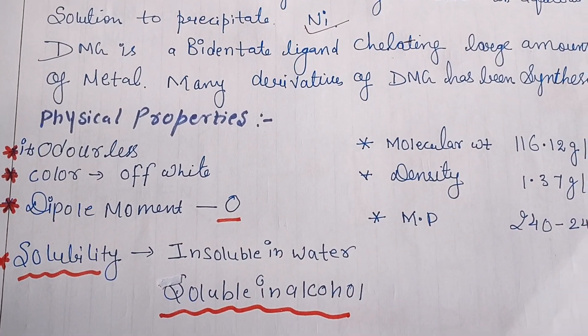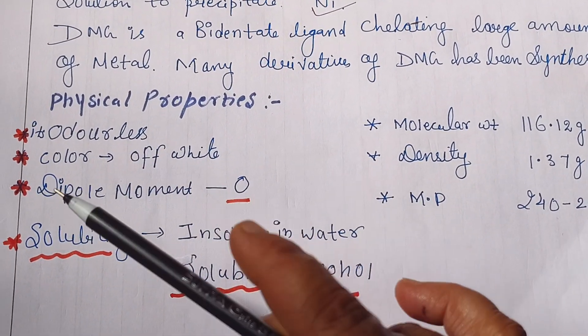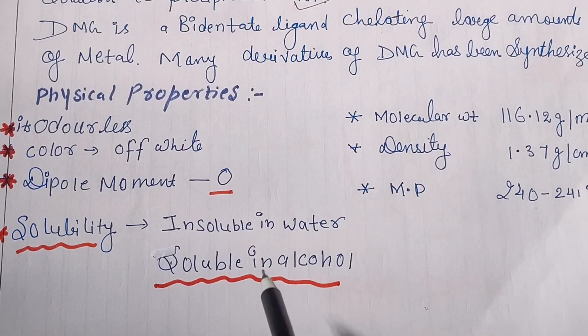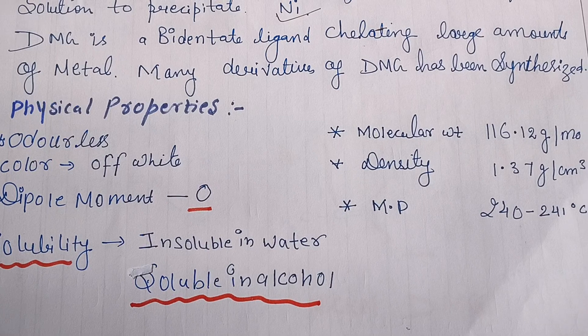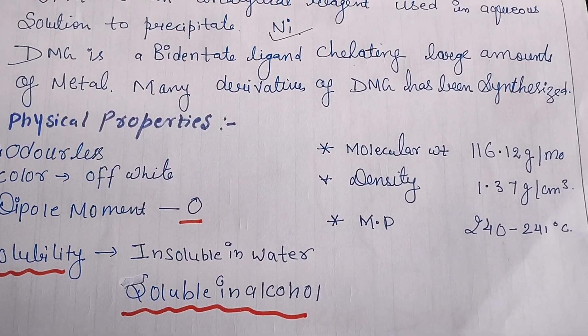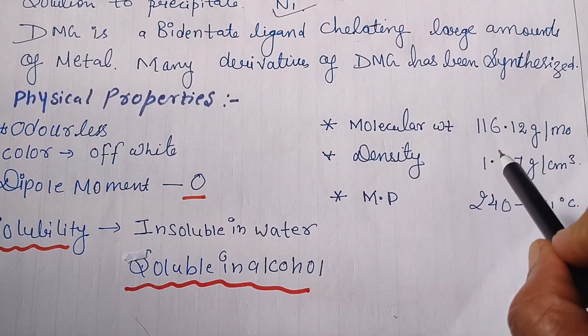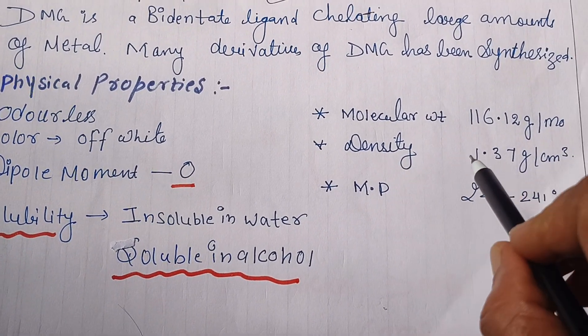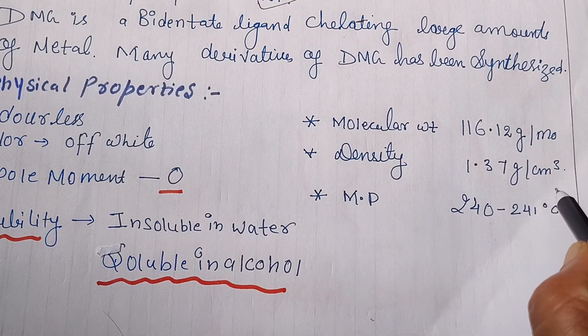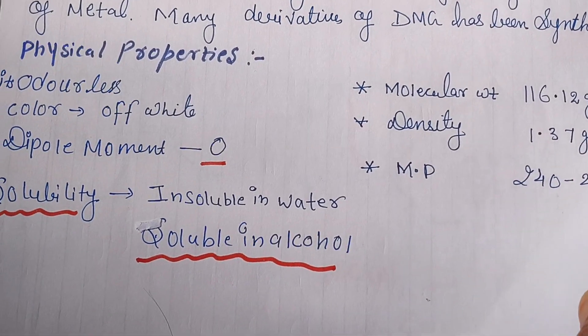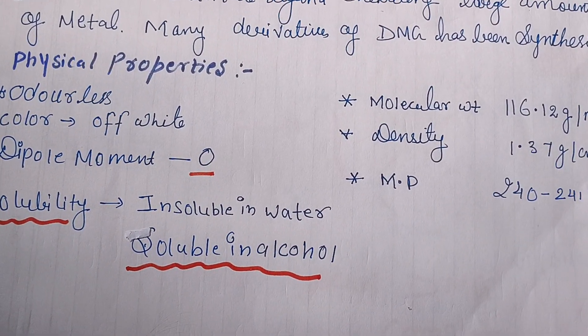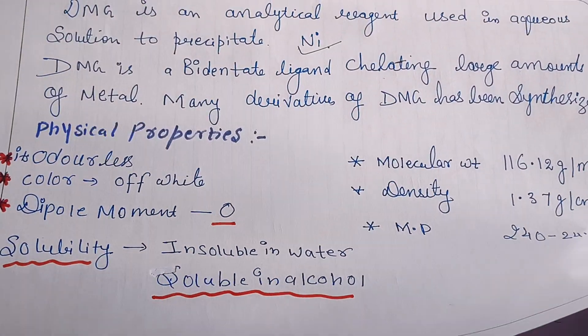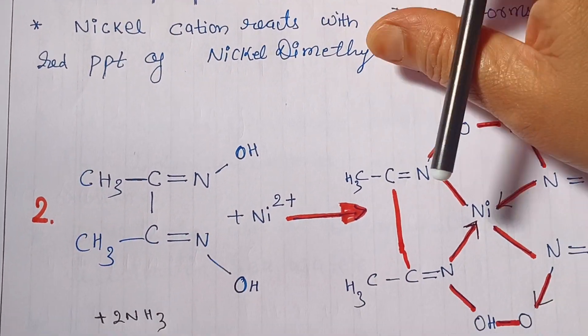Main physical properties - it's odorless, its color is off-white, its dipole moment is zero. It is insoluble in water but soluble in alcohol. Generally we prepare it in alcohol. The molecular weight is 116.12 grams per mole, density is 1.37 grams per centimeter cube, and its melting point is 240 to 241 degrees centigrade.